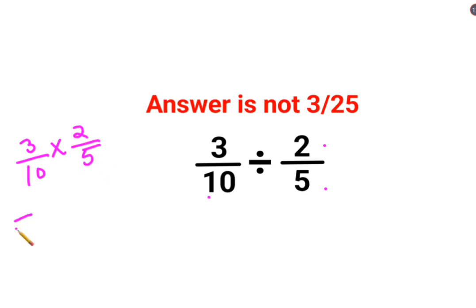So they got the answer as 6 upon 50, which further gets reduced to 3 upon 25. Now that is absolutely wrong. Please understand, whenever you have division in place, you need to follow the rule of KCF.